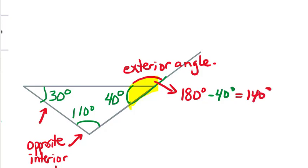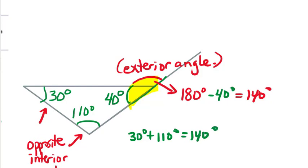Remember, in our problem we want to know the relationship between the exterior angle and the two angles not adjacent to it but opposite on the inside of the triangle. Those are called opposite interior angles, and notice that if you add 30 and 110 you get 140 degrees also. So it turns out that the exterior angle equals the sum of the two opposite interior angles.